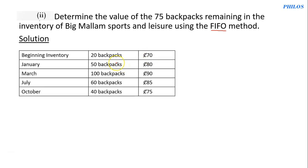According to the FIFO method, we must sell out the old stocks before the new ones. The beginning inventory is older than January, January is older than March, March is older than July, and July is older than October. So if there are 75 backpacks left in stock, these 75 backpacks should be coming from the latest ones, since we sell out the old ones first. That tells us the 40 backpacks from October are part of the 75 remaining.